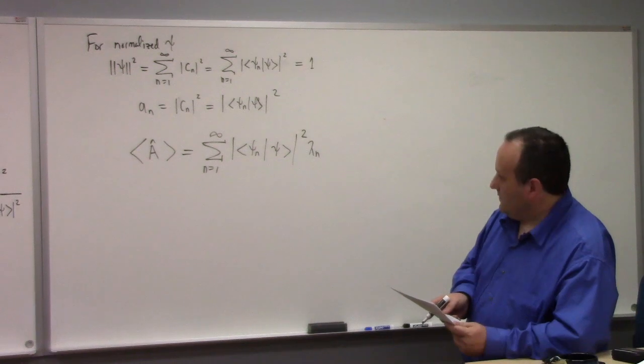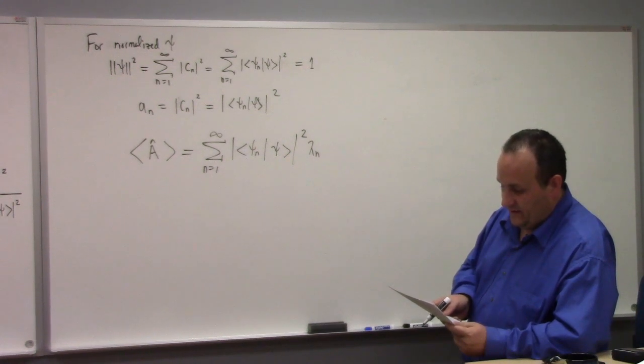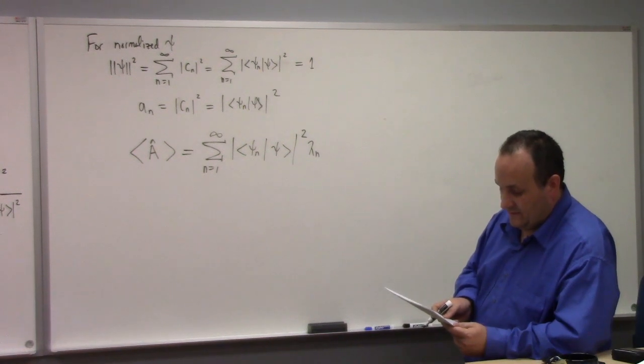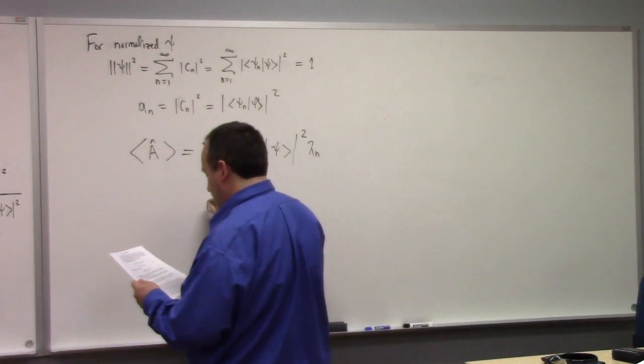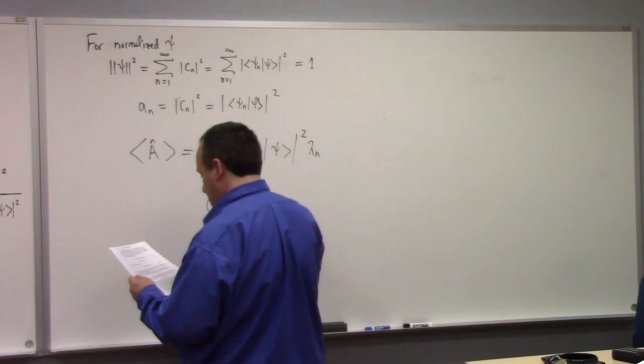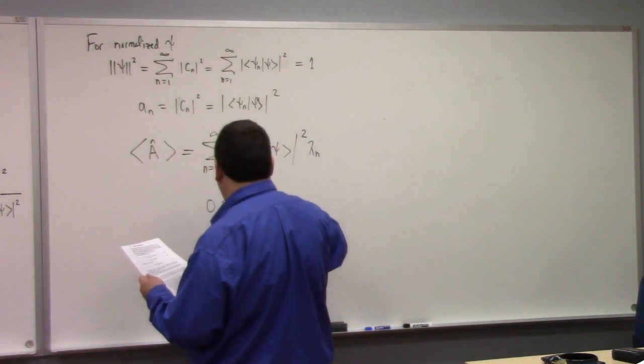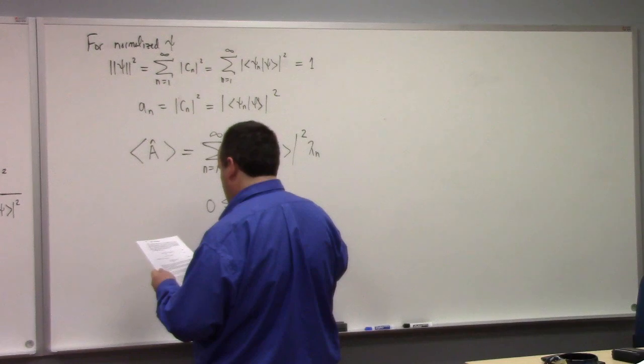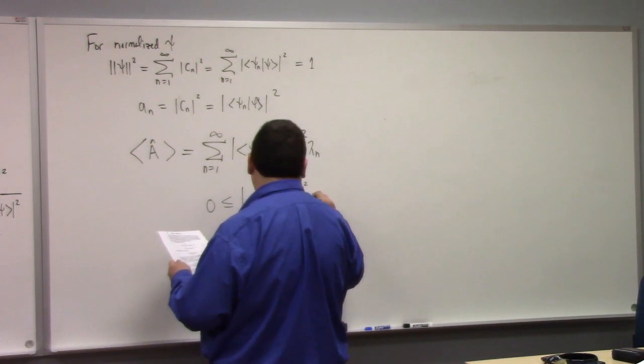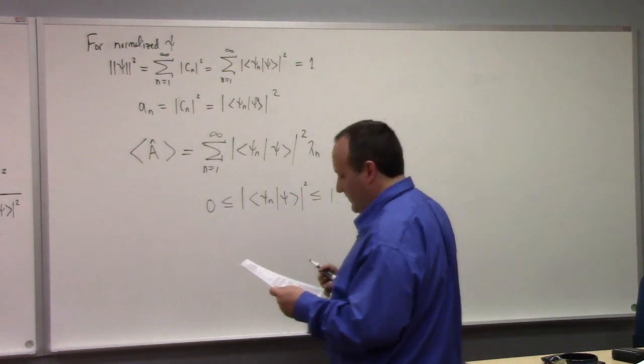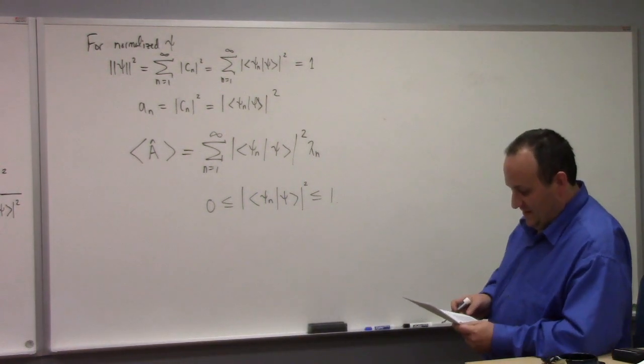And the quantity C_n squared is the probability that the measurement will yield eigenvalue lambda_n of a hat in the normalized state psi of x. It says clearly zero is less than the bracket of psi_n with psi. So that's, you'd like that for a probability, right? And all of these results lead us to postulate five.